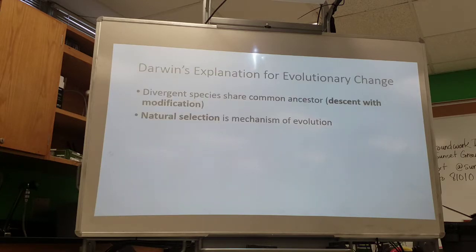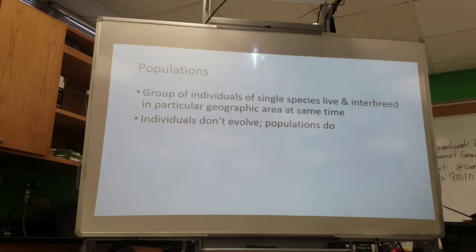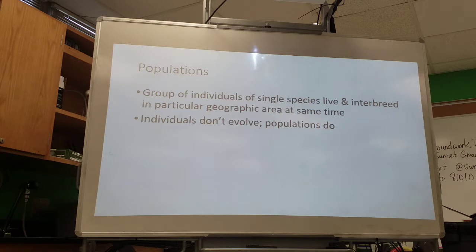Let's go into natural selection. Darwin proposed natural selection as his mechanism for evolution, along with descent with modification — we descend from a common ancestor but with modifications, which explains differences between species and why different species can't interbreed. A population is a group of individuals living in the same place at the same time who can interbreed, meaning they're part of the same species. Populations are the only things that evolve.